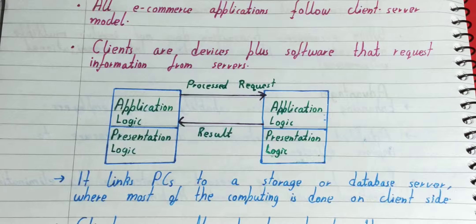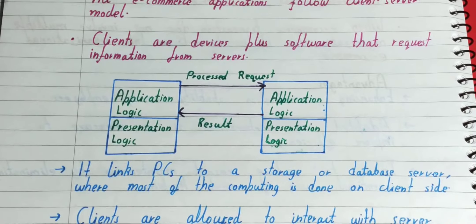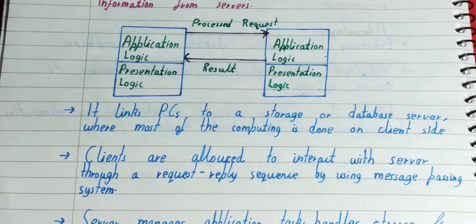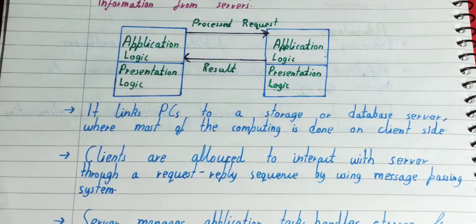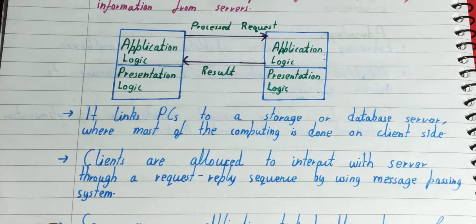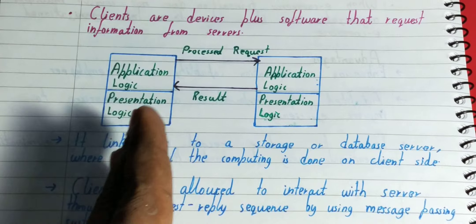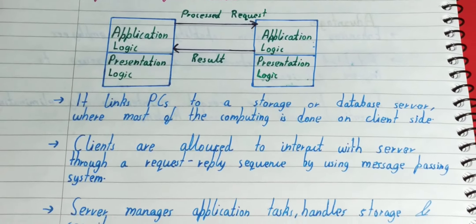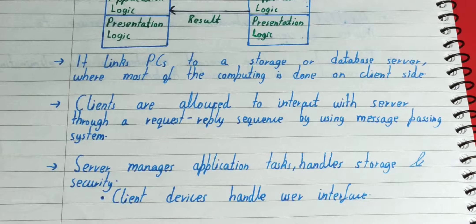Clients are allowed to interact with the server through a request-reply sequence by using message passing system. Clients communicate with the server with help of a message passing system if they want any requests to be completed.